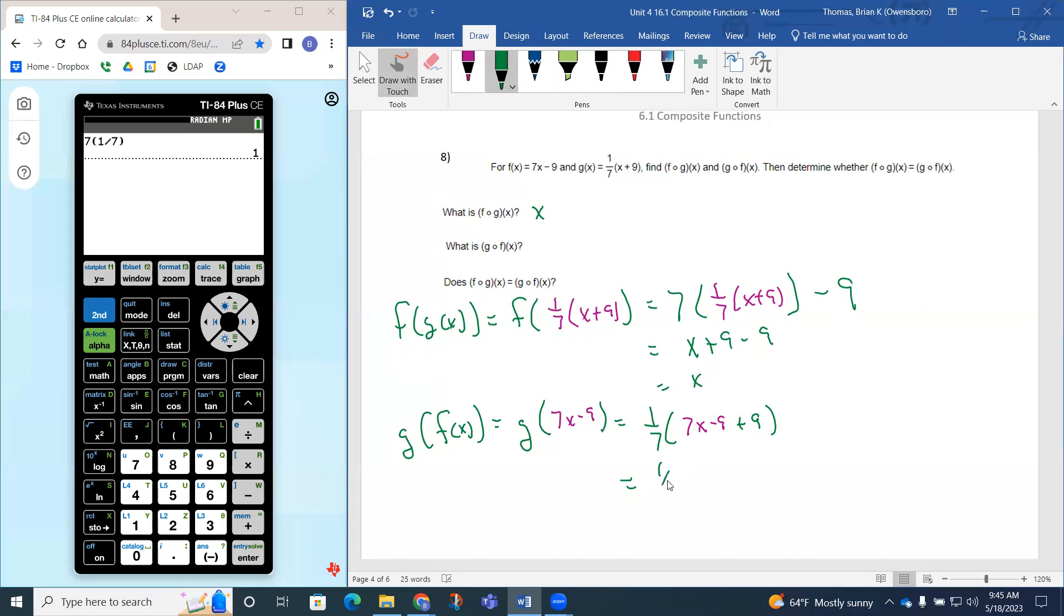That's going to leave me 1/7 times 7x. And 1/7 times 7, again, those are reciprocals. It's going to give you x.